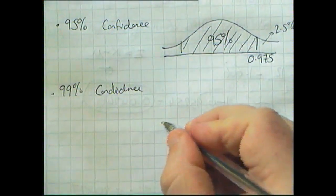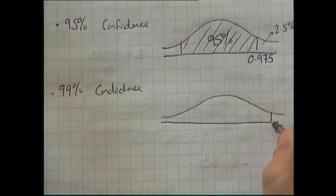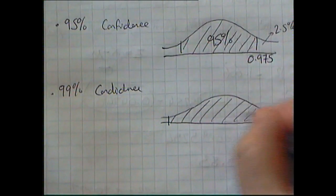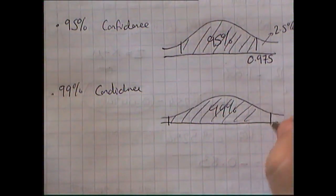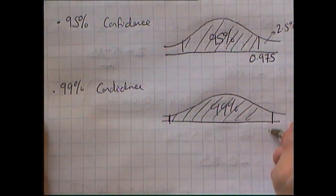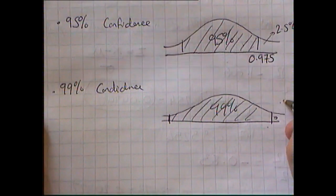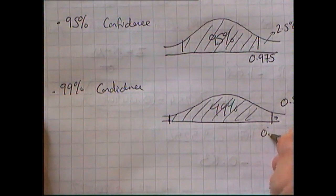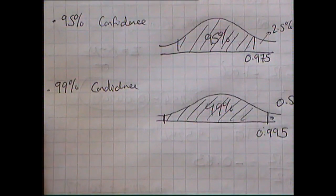For the 99% confidence interval, I need to be 99% confident that I'm between those two values, so the values are now quite a wide range apart. There's only half a percent in each tail, so I'm looking for the 0.995 value when I use my tables.